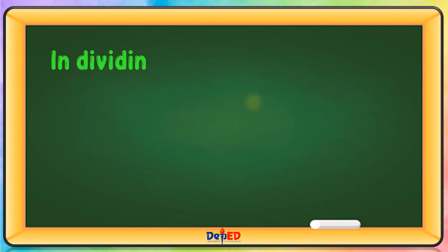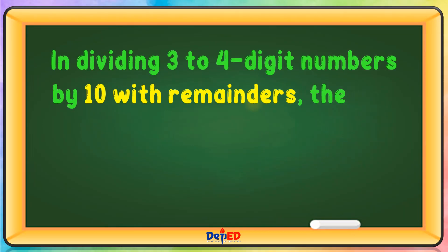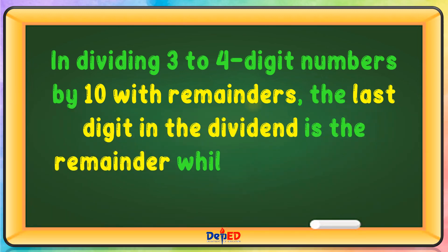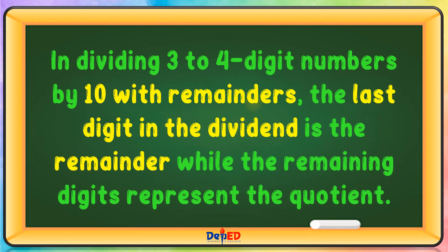In dividing 3 to 4-digit numbers by 10 with remainders, the last digit in the dividend is the remainder while the remaining digits represent the quotient.